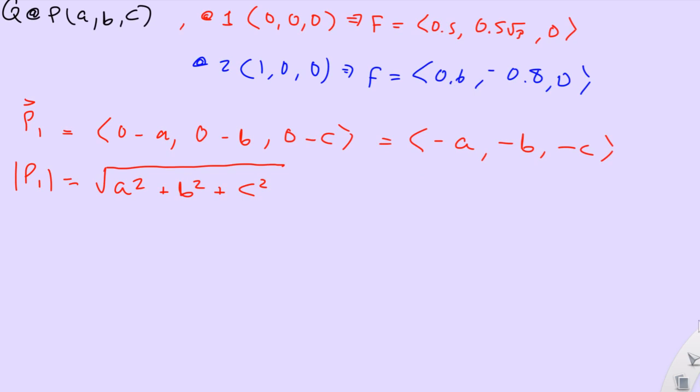Now we find the same vector for P2. We'll call this P2 vector. So it'll be 1 minus A, 0 minus B. I'll just call it negative B, and 0 minus C, which is negative C. And then we'll find the magnitude of P2. Write that over here. Which, again, is the squared elements of these guys. 1 minus A squared plus B squared plus C squared. Okay.